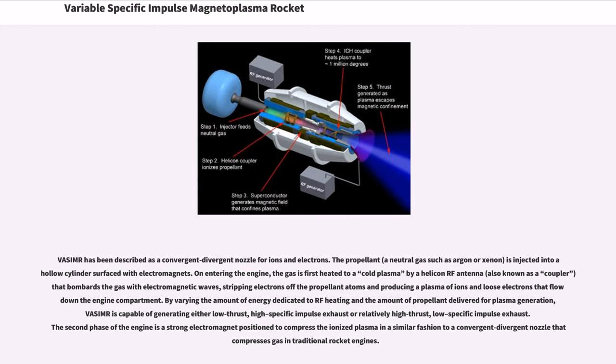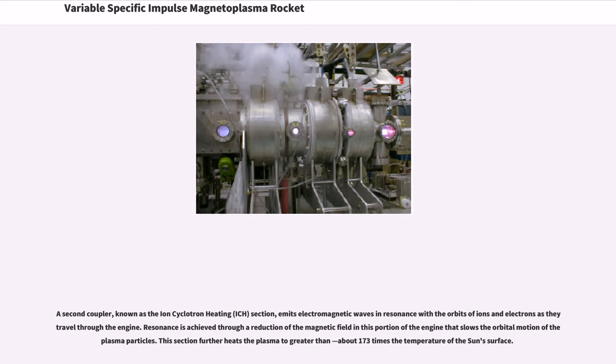The second phase of the engine is a strong electromagnet positioned to compress the ionized plasma in a similar fashion to a convergent-divergent nozzle that compresses gas in traditional rocket engines. A second coupler, known as the ion-cyclotron heating section, emits electromagnetic waves in resonance with the orbits of ions and electrons as they travel through the engine. Resonance is achieved through a reduction of the magnetic field in this portion of the engine that slows the orbital motion of the plasma particles. This section further heats the plasma to greater than about 173 times the temperature of the Sun's surface.